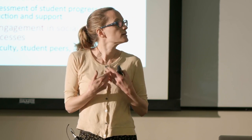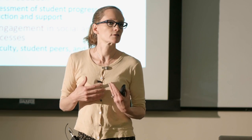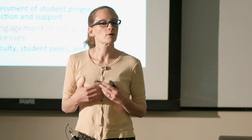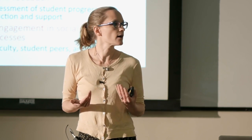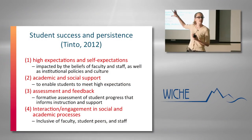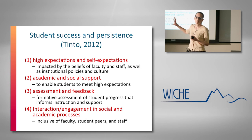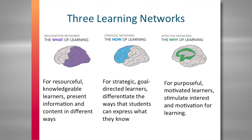One student is going to need one type of social support; another student needs a different type. As faculty, it can be pretty overwhelming to attend to so much variability in fairly complicated ways. But the good news, grounded in the neurosciences, is that some variability in learning is actually systematic and you can plan for it. People differ systematically in three different ways.